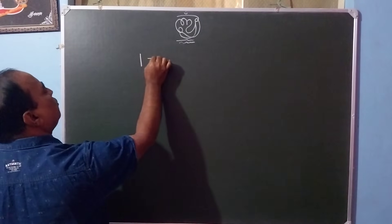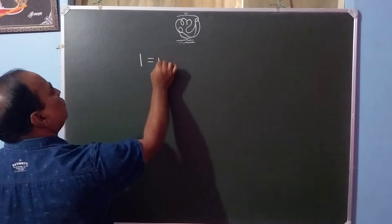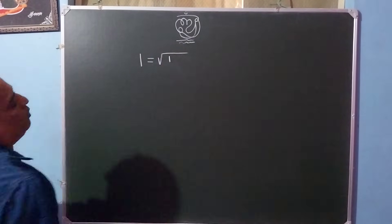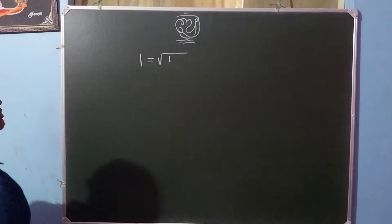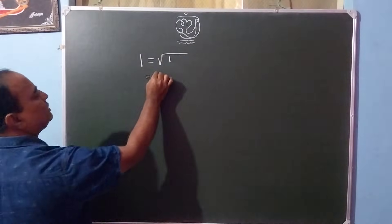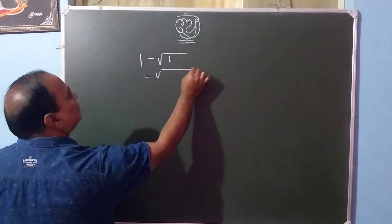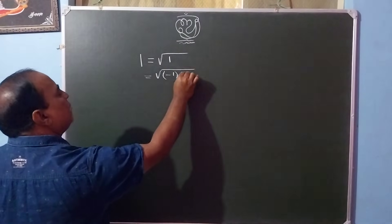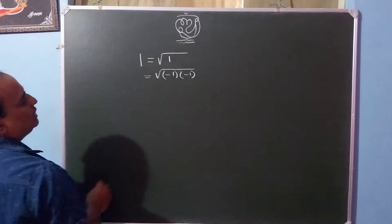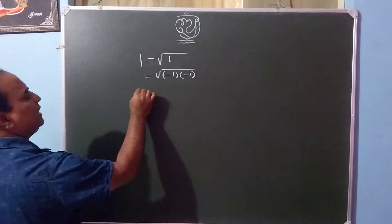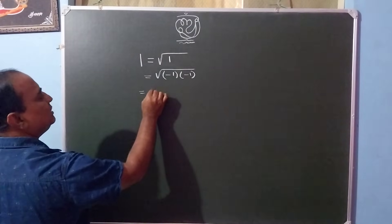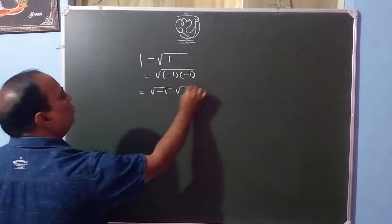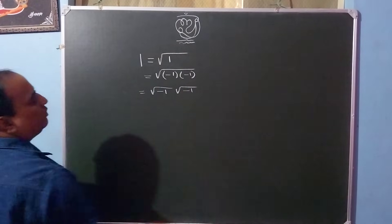1 is equal to 1, square root of 1. So that can be written as minus 1 into minus 1. This can be written as square root of minus 1 into square root of minus 1.